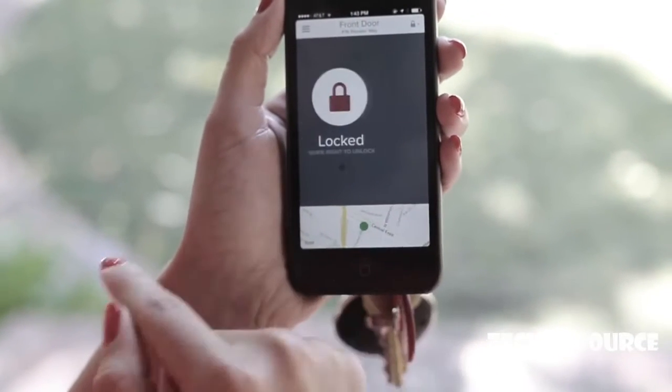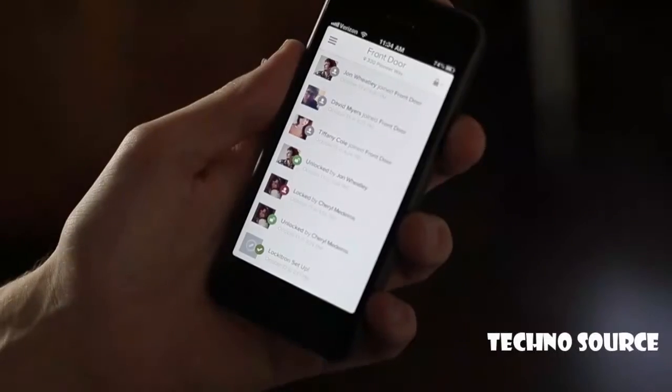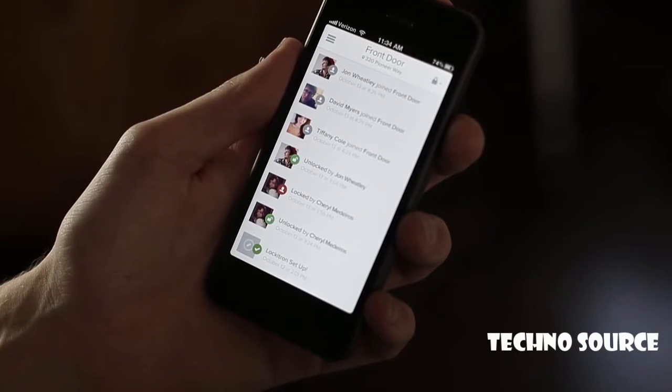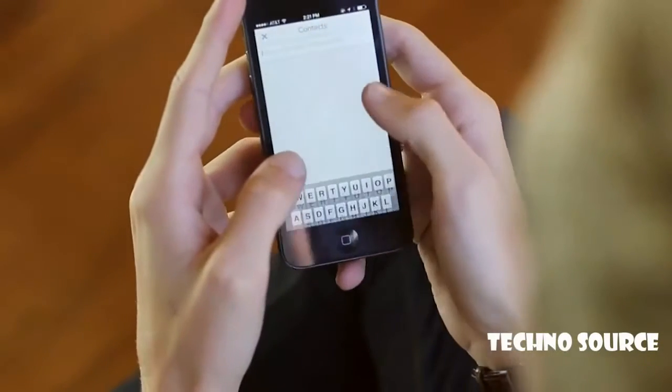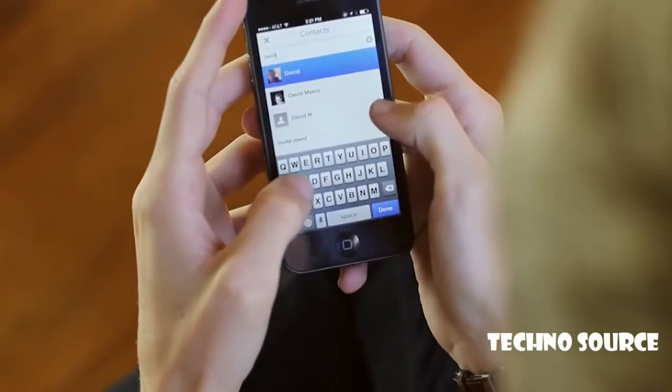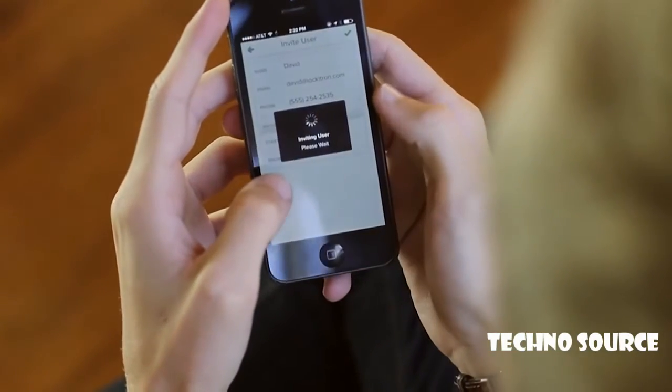When you open the app, you're presented with a simple lock-unlock button. What you also have is an activity log. This shows you who's come and gone. You can check to see if your roommate's home. And it also has the ability to add and remove guests. You just tap a button next to your friend's name, and suddenly they have a key for the weekend.